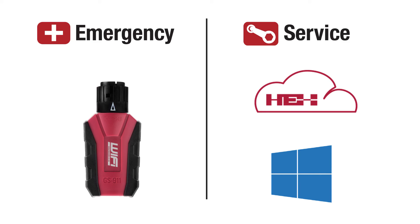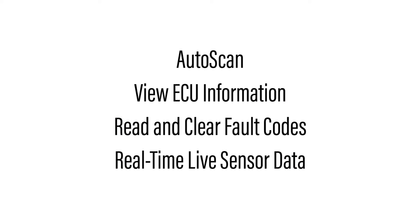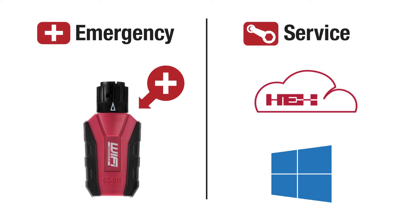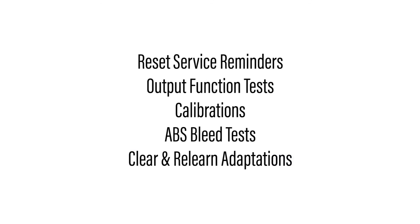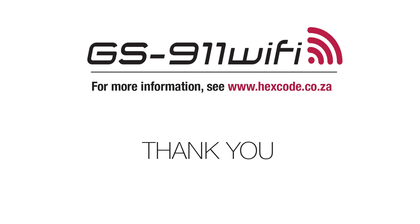Let's do a quick summary. Emergency functionality refers to the auto scan, the viewing of ECU information, the reading and clearing of fault codes, and the viewing of real-time live sensor data. These functions are embedded on the device itself and are always available in any mode or setup. Service functionality, on the other hand, includes the ability to reset service reminders, do output tests, calibrations, ABS bleed tests, the clearing and relearning of adaptations, and much more. It's available via the GS911 Windows PC application or the HEX Cloud. That means if you have iOS, Android, or Mac, you have to set up in infrastructure mode to have service functionality. And that's it — thank you for watching.